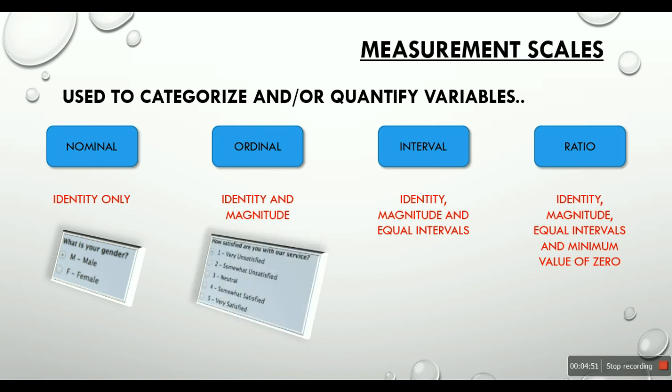Think of Ordinal data, customer satisfaction survey, where you have been asked to rate the service. Whether you are satisfied, very satisfied, not satisfied, less satisfied, dissatisfied. So satisfaction here is the identity and magnitude is very less neutral somewhat. So that is Ordinal scale of measurement.